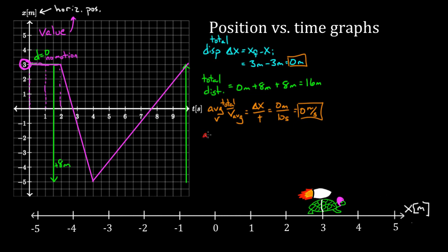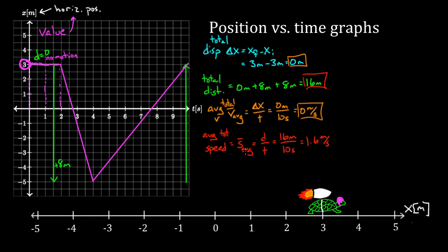How about average speed? Average speed is defined as distance per time. The total distance was 16 meters, divided by ten seconds — this turtle was going 1.6 meters per second on average. That was her average speed. It probably would have been a little higher if she hadn't had that technical difficulty at the beginning.